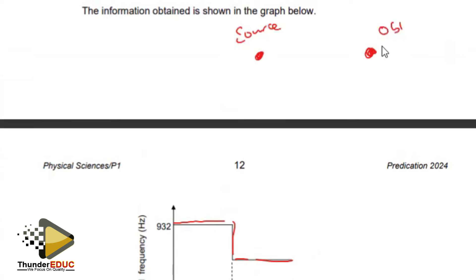But we already have the frequency. The frequency is 932, so at this point the listener is getting a 932 hertz of frequency.